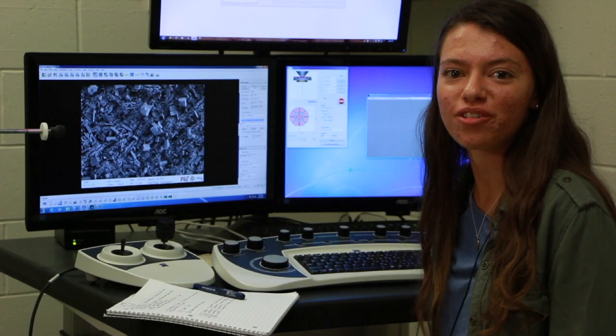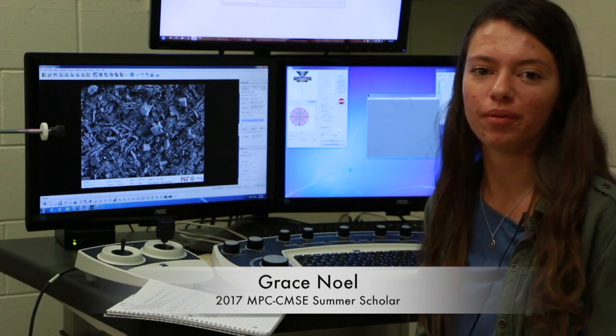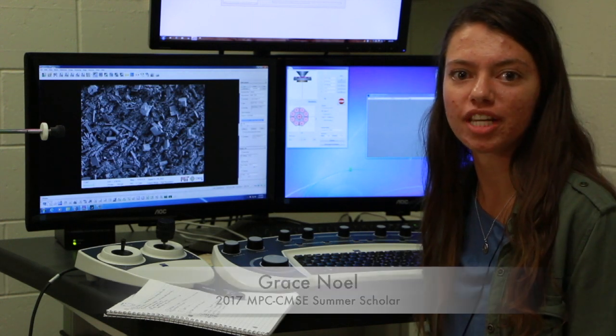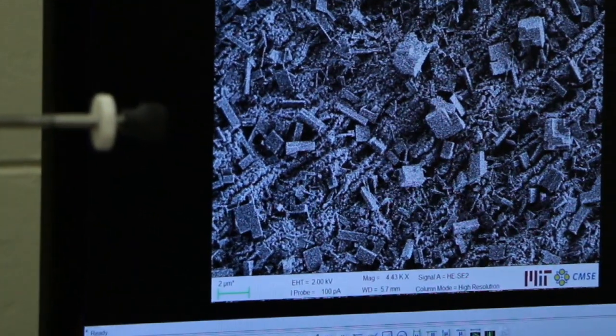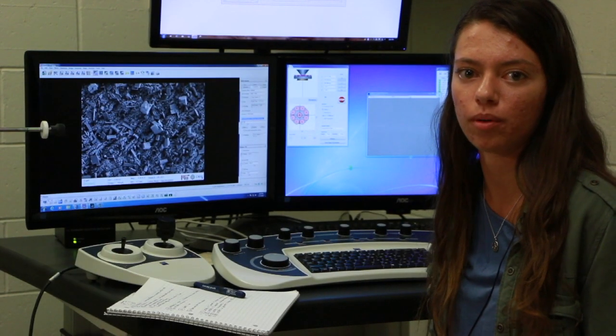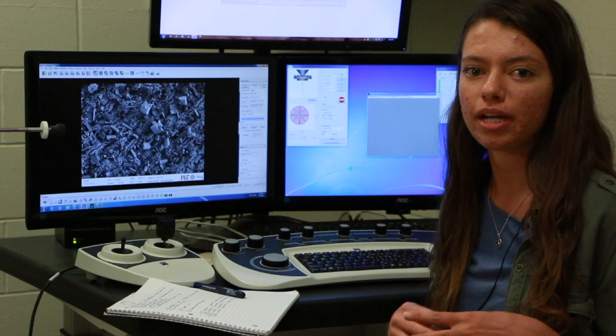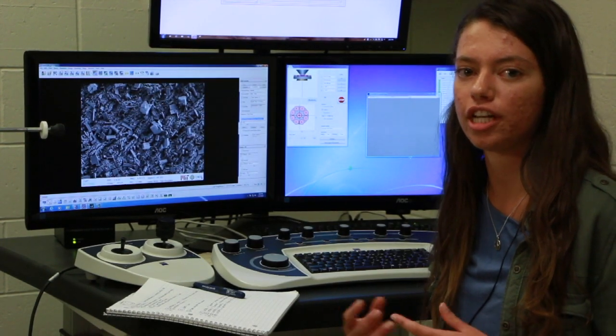My name is Grace Knoll. For my project, I'm working with different perovskite materials with different cations. The different cations are methyl ammonium, cesium, and formamidinium. And basically by changing the cation, you can change the properties of the perovskite.